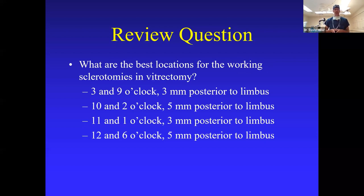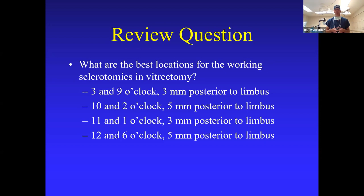Another review question: what are the best locations for the working sclerotomies in vitrectomy surgery? Choice one is three and nine o'clock, three millimeters posterior to the limbus. Choice two is ten and two o'clock, five millimeters posterior to the limbus. Choice three is eleven and one o'clock, three millimeters posterior to the limbus. And choice four is twelve and six o'clock, five millimeters posterior to the limbus.